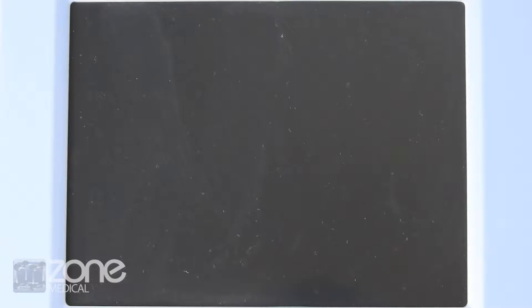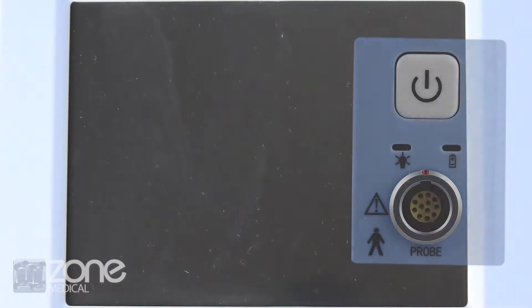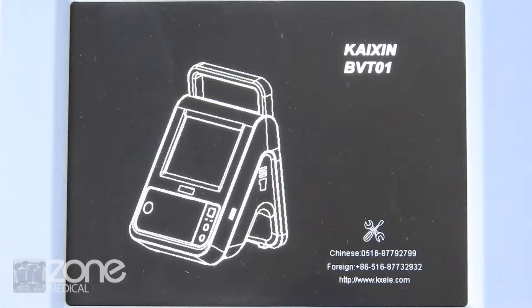To begin operation of your BVT-01 bladder scanner, simply press the power on button for one second. The machine will start up.